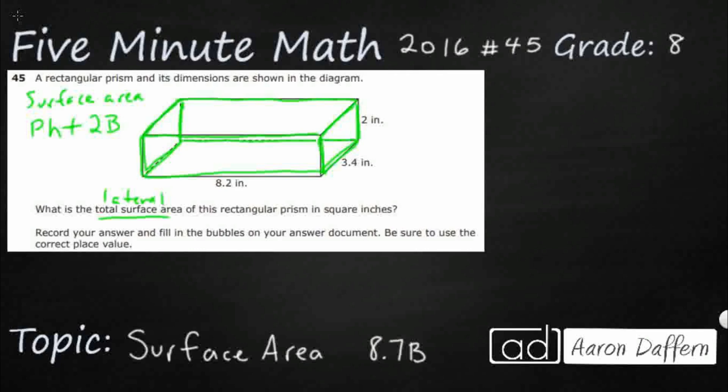We still need to piecemeal it a little bit. Let's look at this lateral surface area equation. We've got P times height, so we literally need to find the perimeter of our base right here.